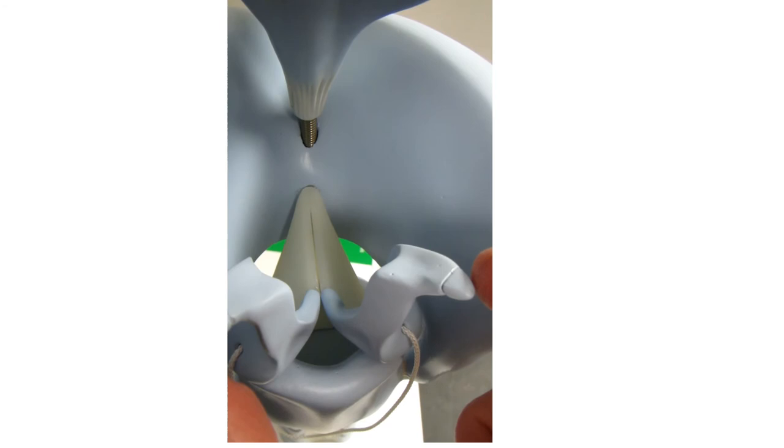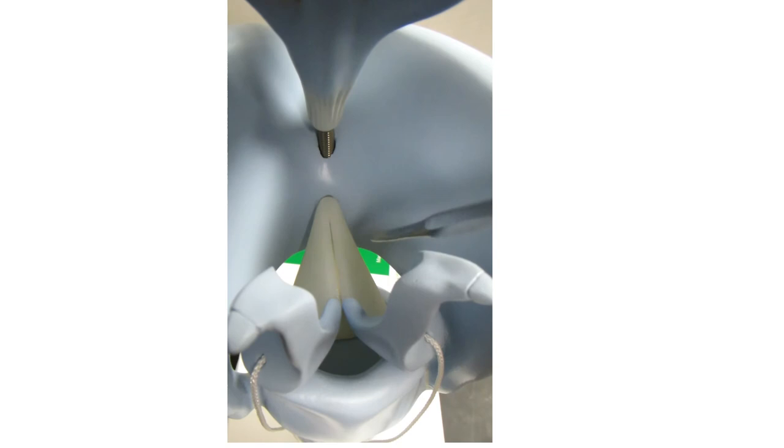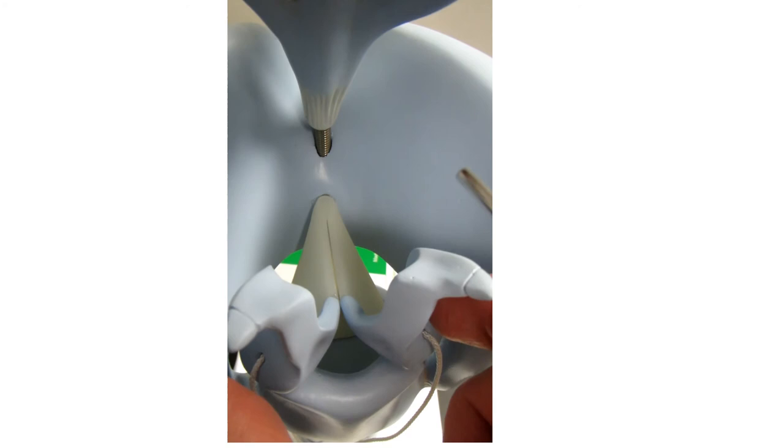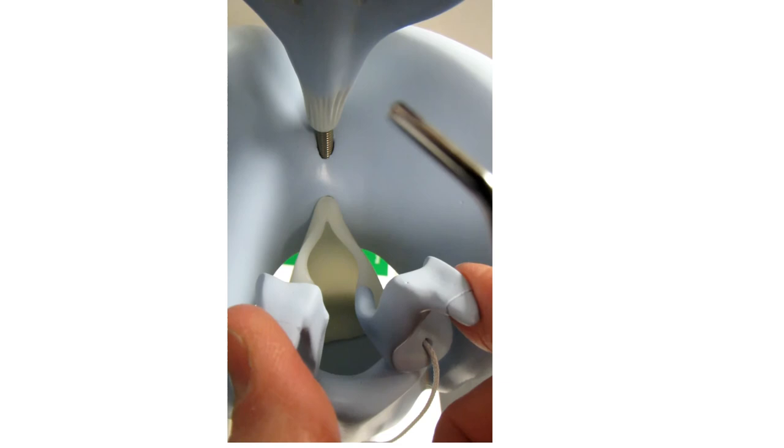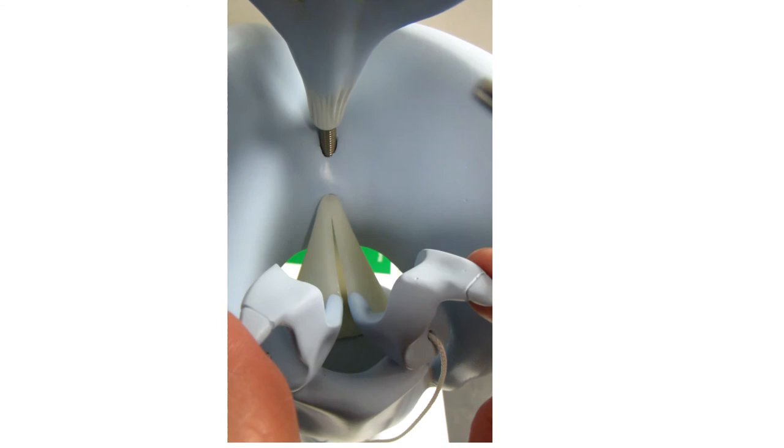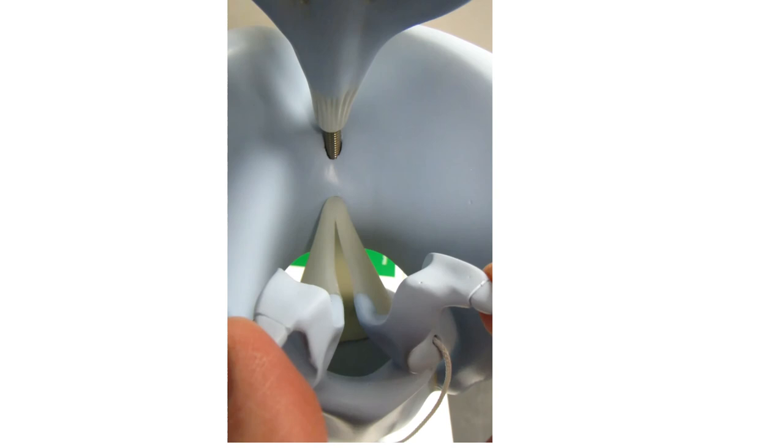The rest of the vocal folds on either side are referred to as the false vocal folds. Together they work to keep foreign material out of the windpipe. Remember that's the primary function of the larynx—to keep foreign material out of the windpipe.